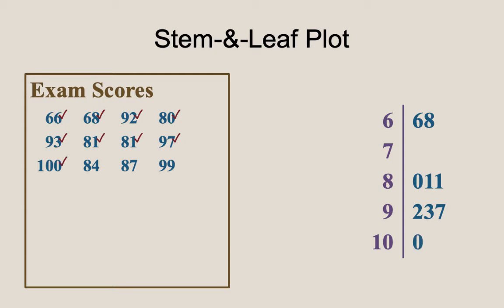Continuing, 0 in the last row labeled 10 for 100, 84, 87, 99, and that is all the data now recorded in the stem-and-leaf plot. Again, it has a bit of a feel of a tally plot, but instead of tally marks on the right-hand side, we actually have digits. One digit representing one value of the data set.